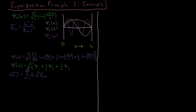Writing the expectation value of E in terms of these individual wave functions, we have the square root of 1 over 2 squared, and so on. We also require normalization: the sum from n equals 1 to infinity of C_n* C_n — which is the same as the absolute magnitude of C_n squared — must equal 1. This is the normalization condition for a general superposition of states.